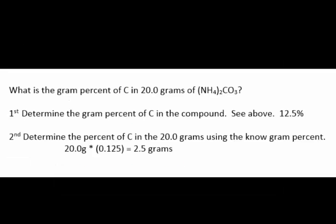And a similar follow-up question could be asked about ammonium carbonate. Determine the gram percent of carbon in the compound. We need to know the percent of carbon in the compound, and that is 12.5%. Convert the percent to a decimal and multiply the decimal value by the 20 grams.